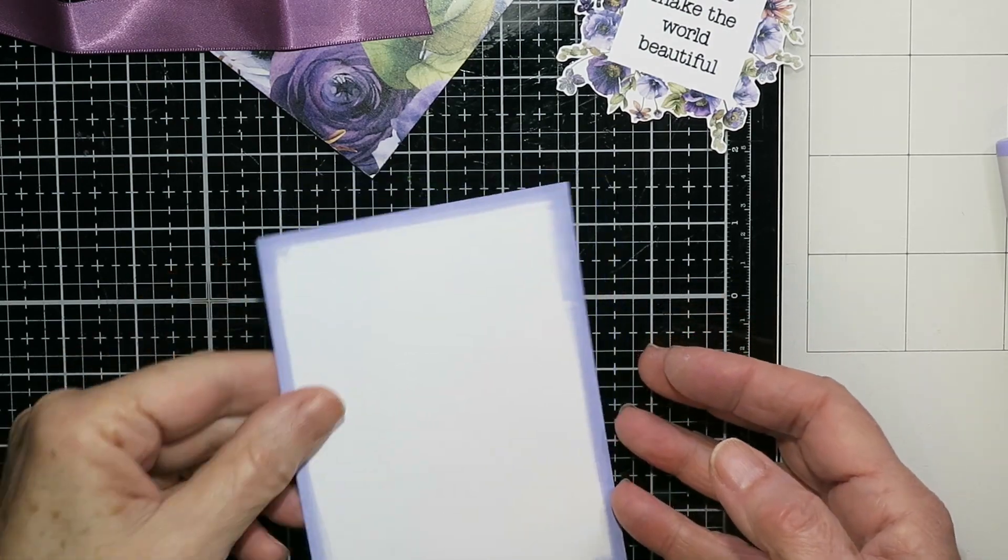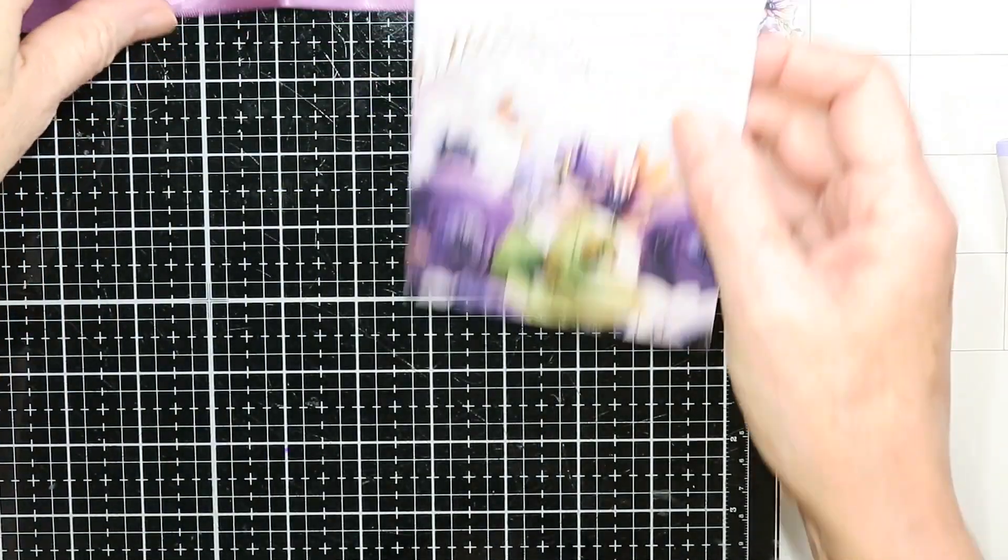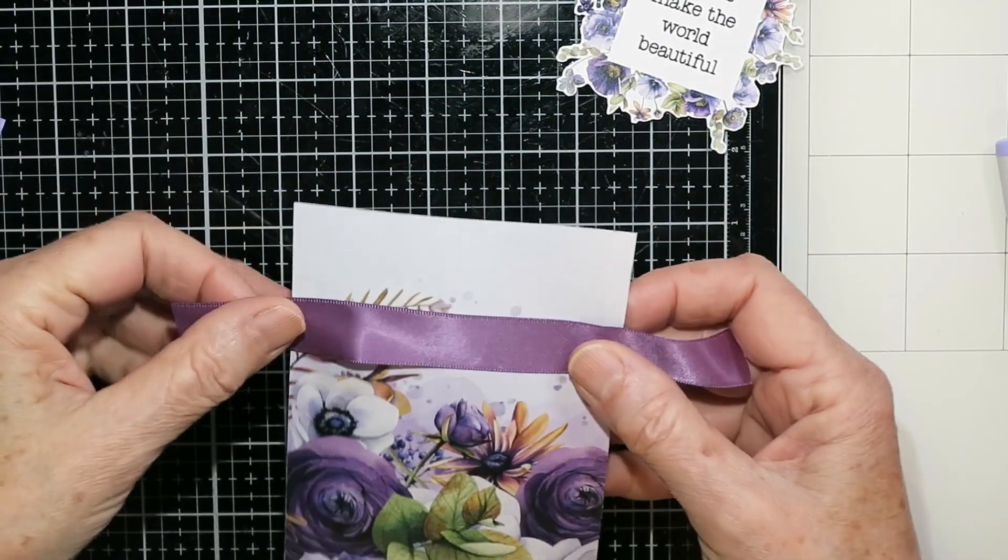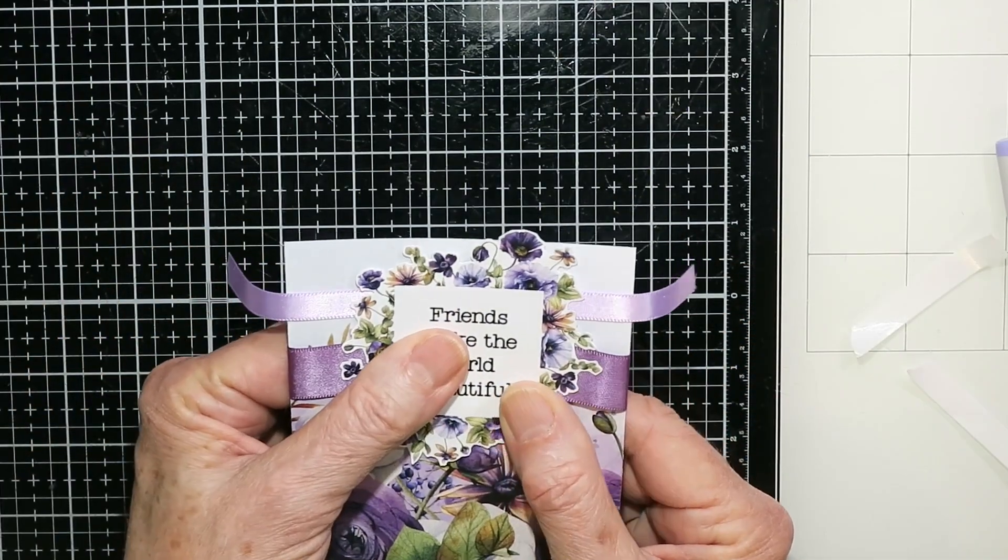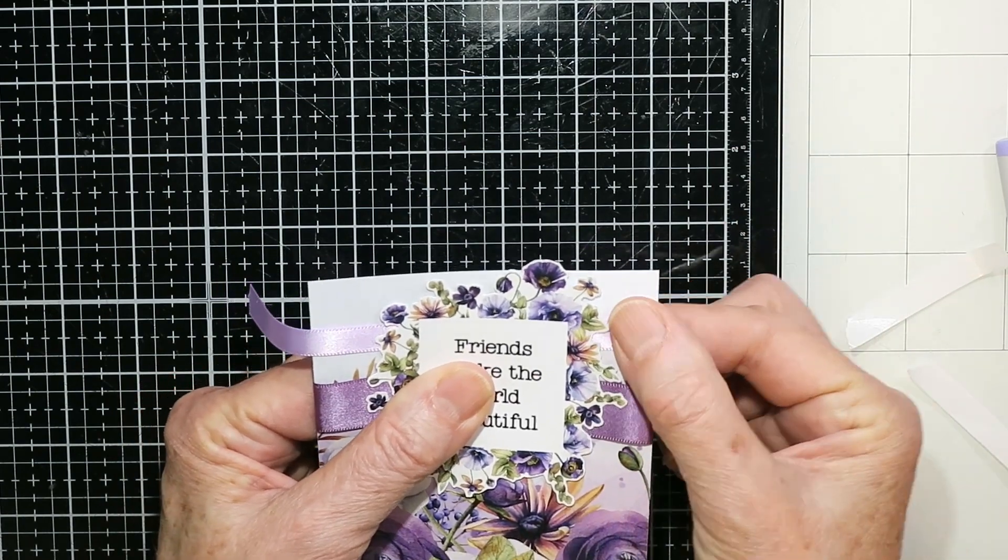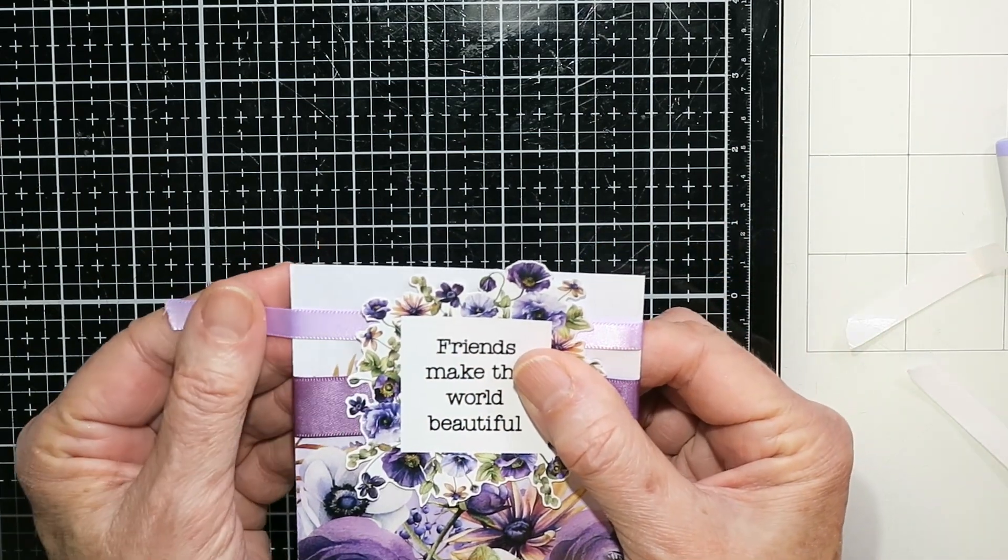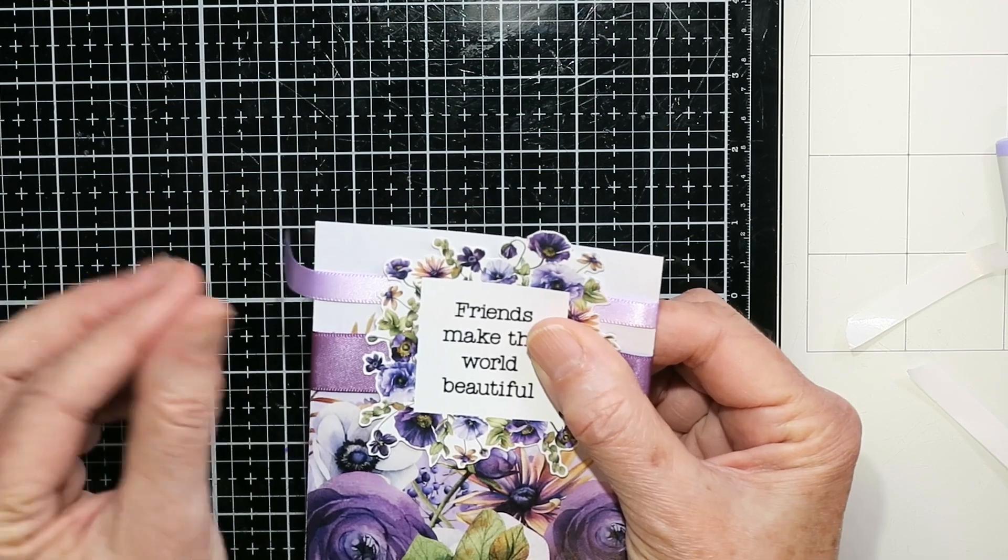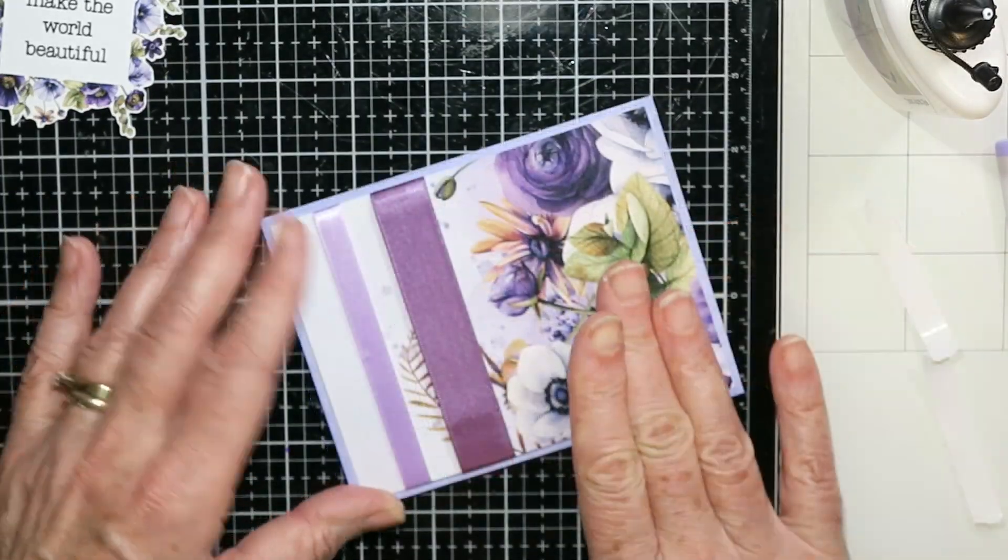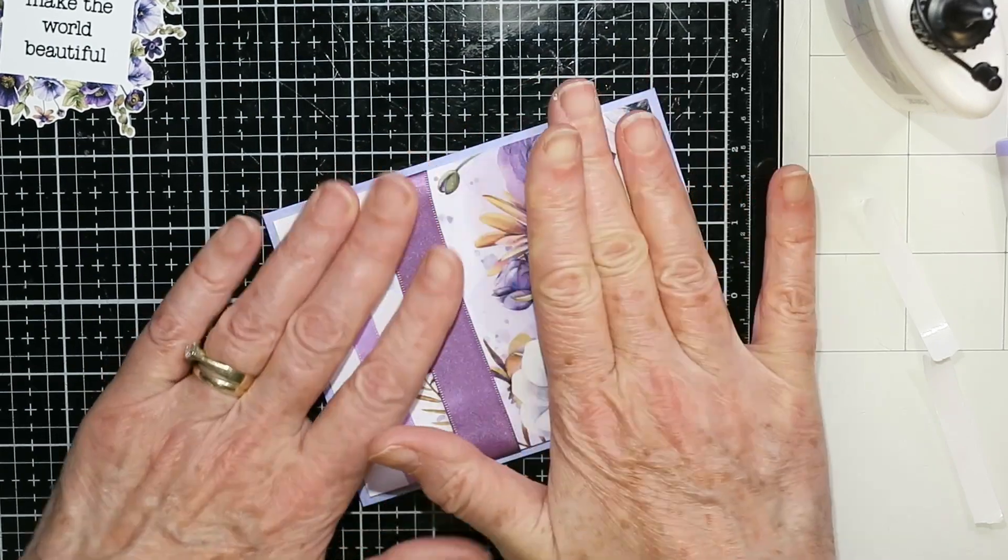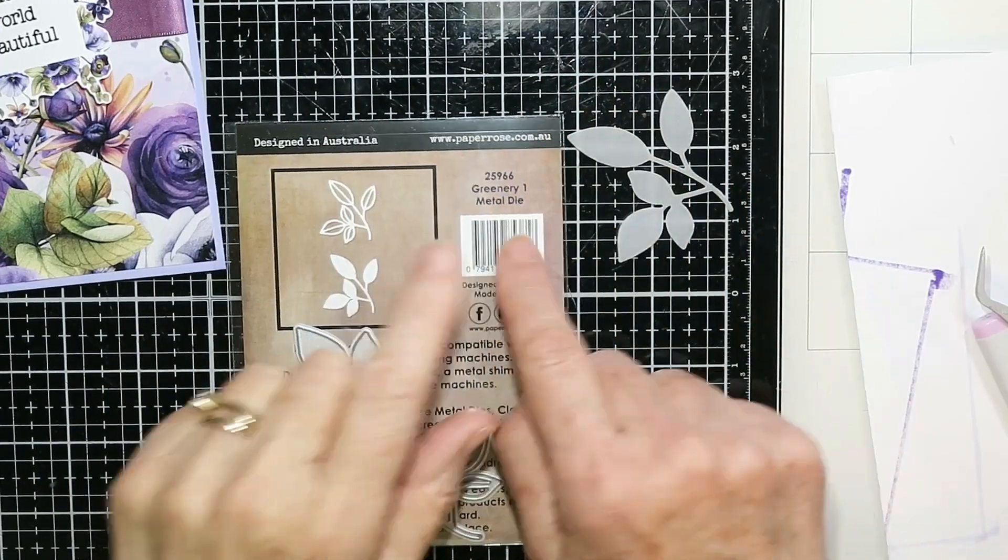Now again, for the second one, I used an alcohol marker just to make a background on the edge. And I decided to put some ribbon on this one. So I've put some double-sided tape on the back, and I'm just attaching that ribbon. I was trying to figure out where to position it. And I'm gluing all of that down now onto that card front that I've used my marker on.